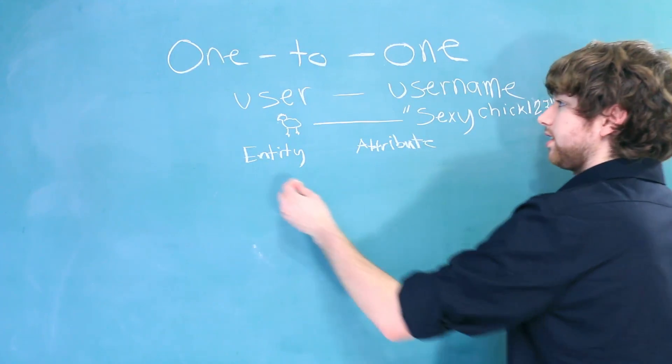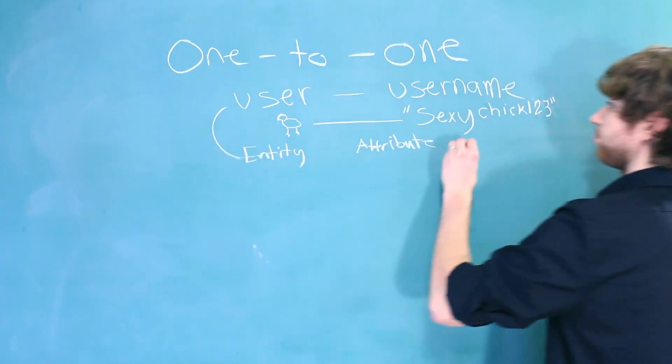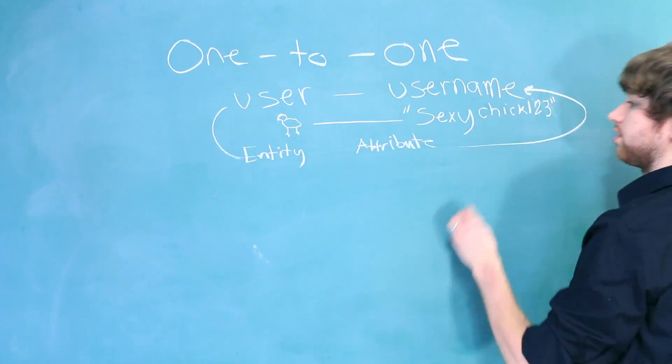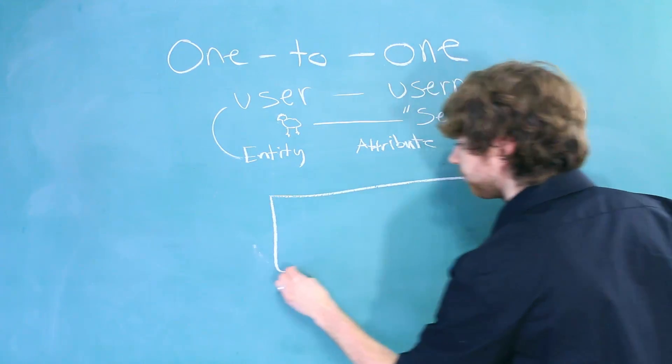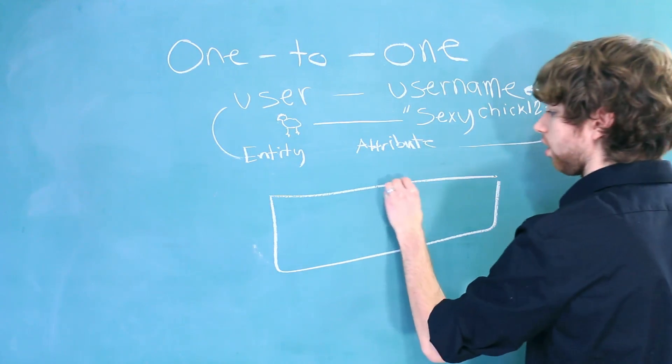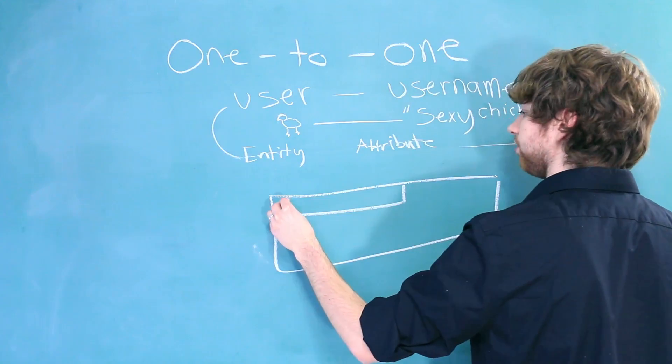This brings us back to the terms entity and attribute. In this situation, the entity is the user, and the attribute is the username. So, we can just have a user table, and one of the columns could be the username.